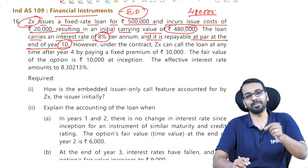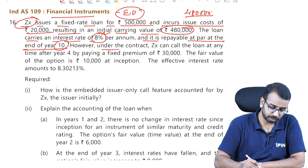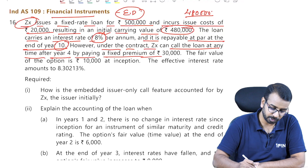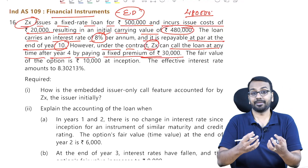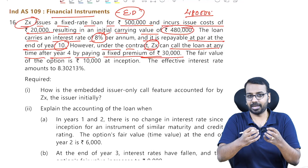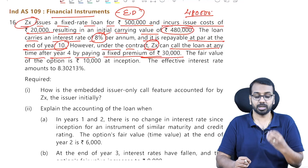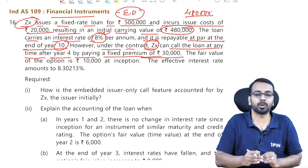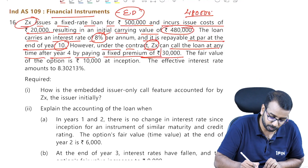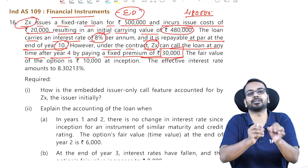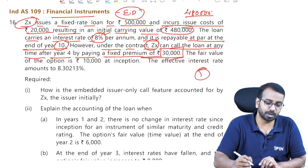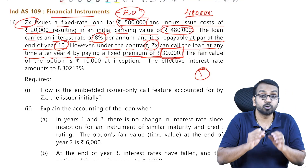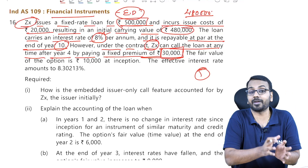8% is the rate and repayment is happening at par. However, under the contract, ZX can call the loan at any time after year 4 by paying a fixed premium of 30,000. ZX has taken a loan — issuing a loan means they have borrowed, like issuing a debenture. After year 4, at any time, they can pay a premium of 30,000 and settle the loan. So in the 5th year, if they want to settle, they need to pay 5 lakhs plus 30,000 — a total of 5,30,000.